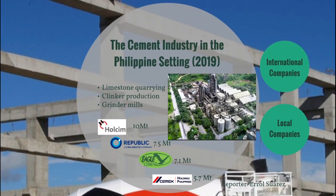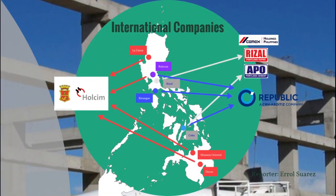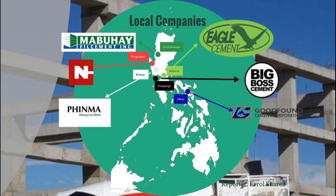While the Philippines is nowhere near the top countries in cement production, it is not reliant on importing cement as there are many cement companies here. The most notable brands in terms of production in 2019 are Holcim, Republic, Eagle, and Cemex. Many Philippine cement companies can do their own limestone quarrying with local plants for clinker production and cement grinding. Three top international cement companies have plants here: CEMEX, CRH, and LafargeHolcim. Holcim, now owned by San Miguel, has plants in La Union, Bulacan, Misamis Oriental, and Davao. CEMEX produces APO Cement in Cebu and Rizal Cement in Rizal. CRH produces Republic Cement in Bulacan, Batangas, and Cebu. Local companies include Big Boss Cement in Pampanga, Eagle Cement in Bulacan, Goodfound Cement in Albay, Finma Cement in Bataan, and Northern Cement in Pangasinan.